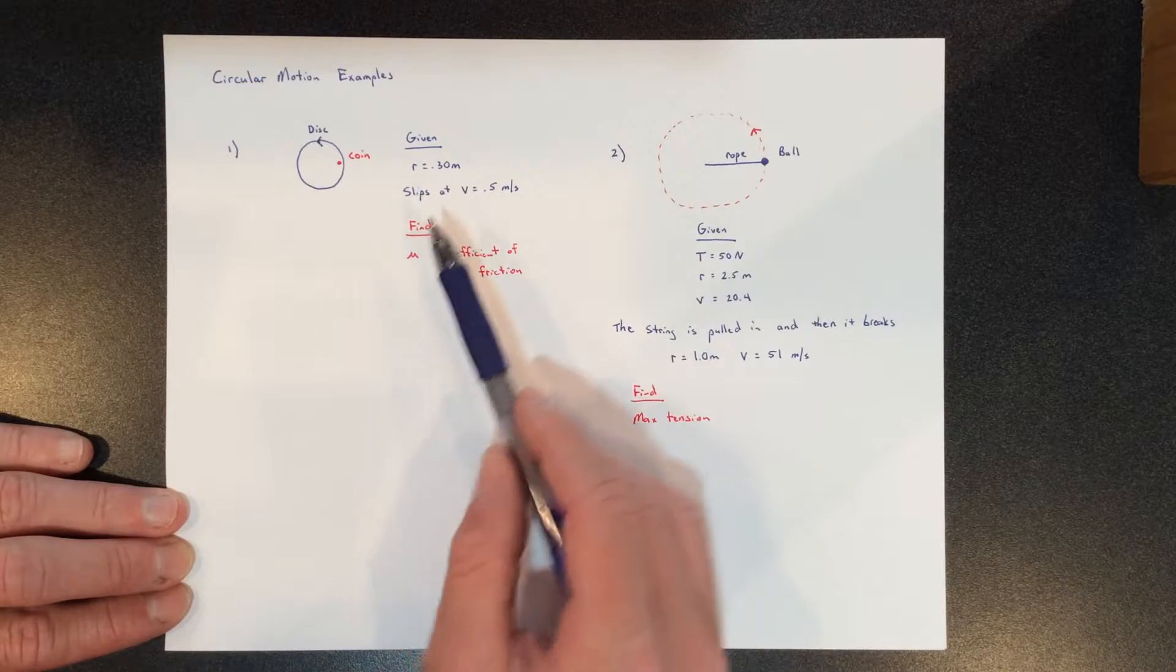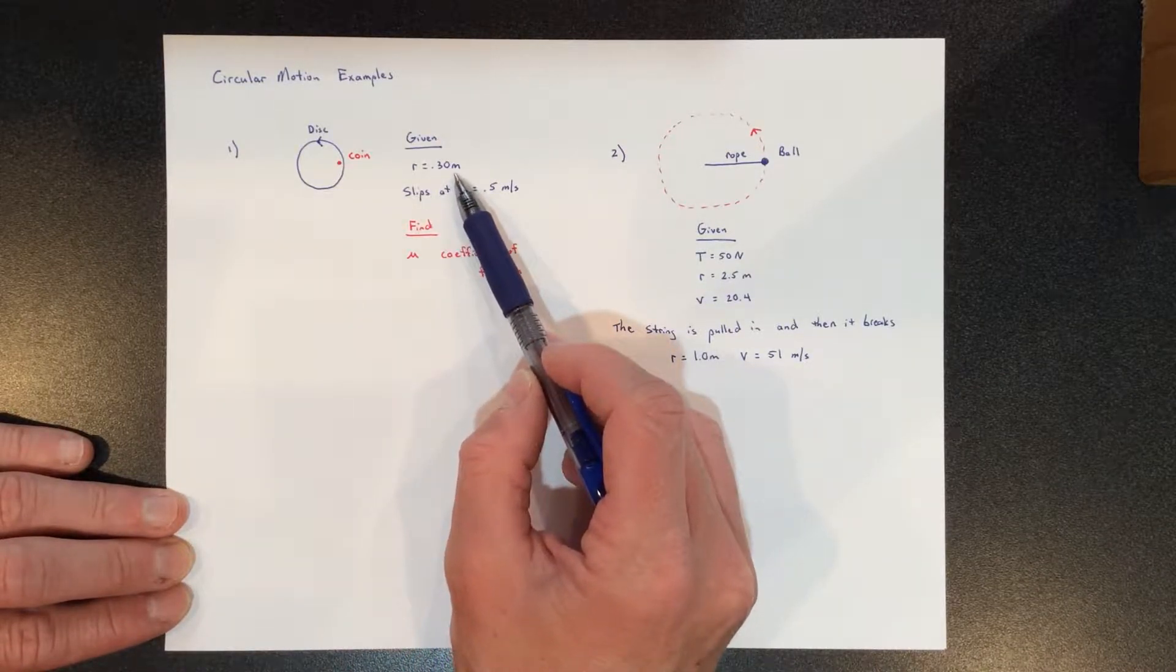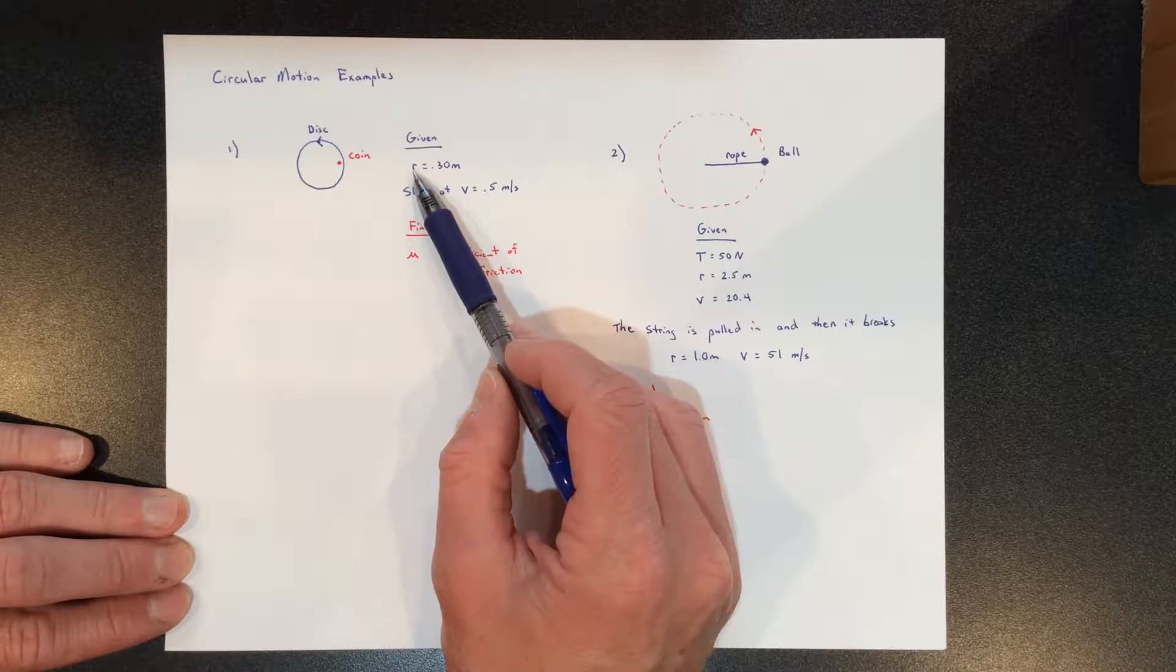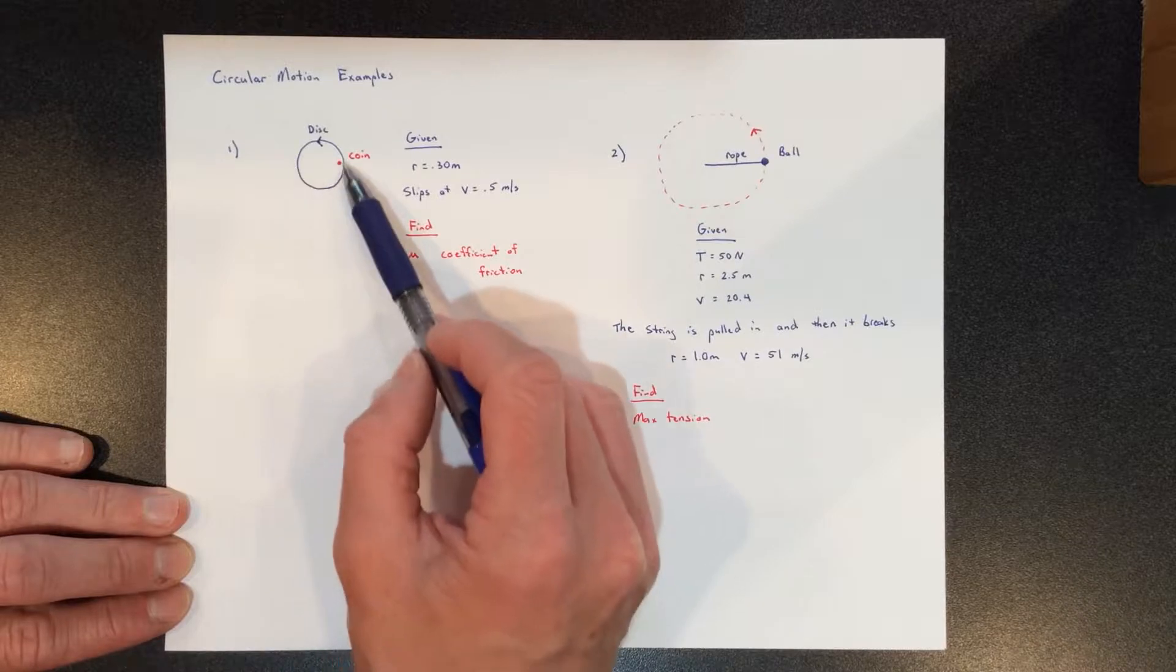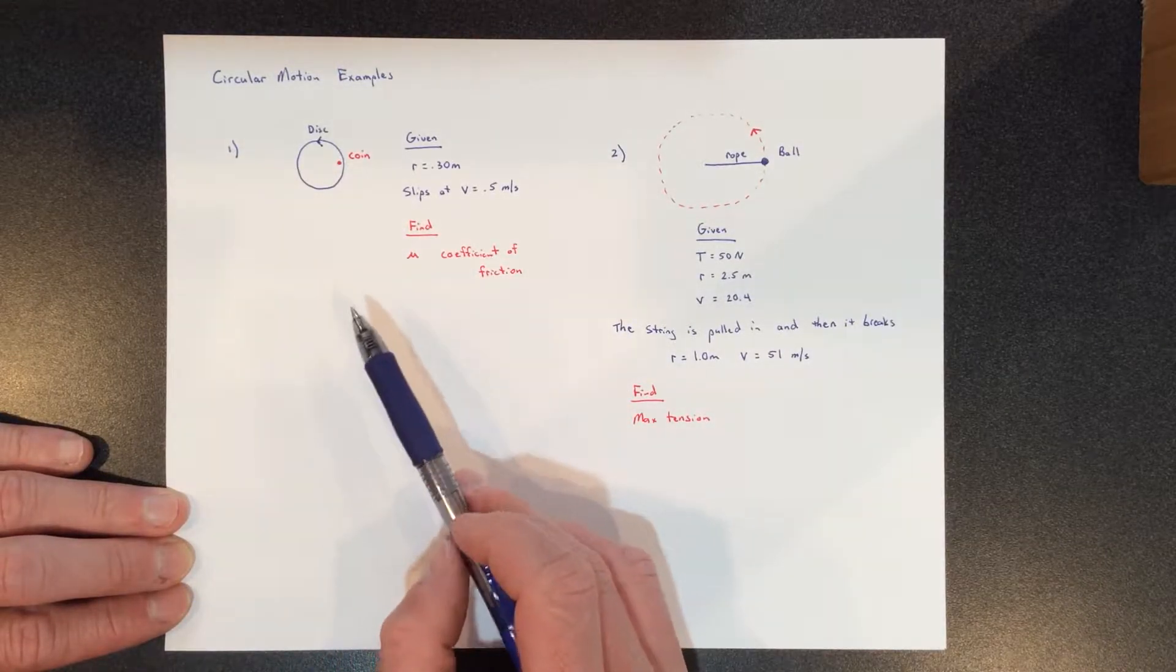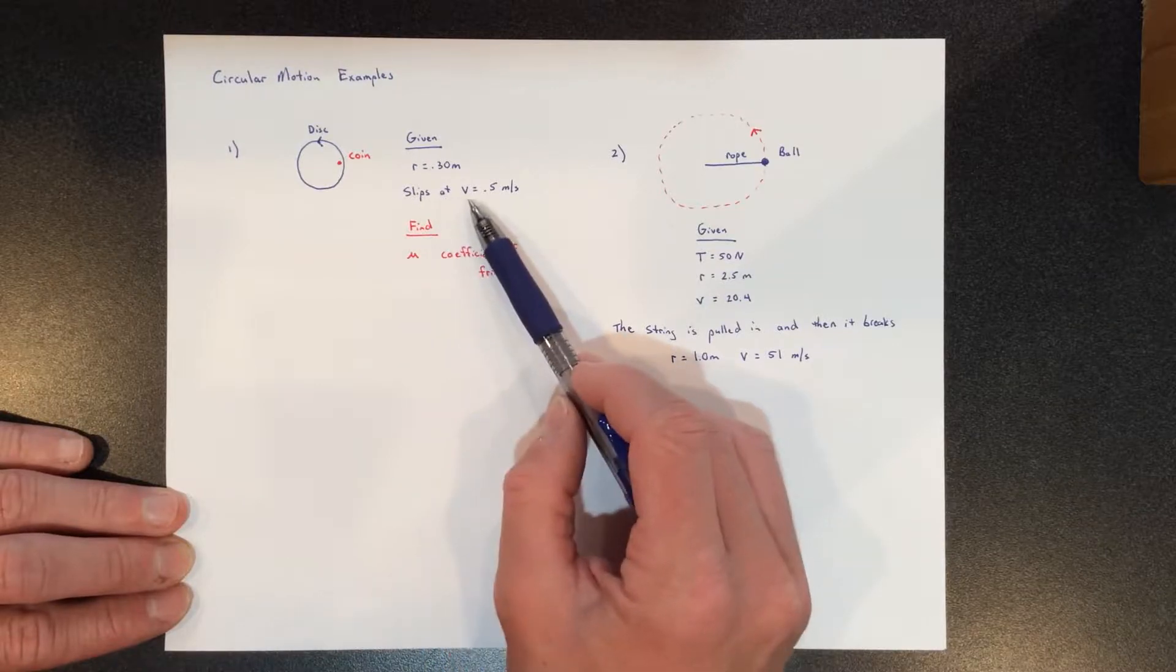What we're given is that the coin has an r value of 0.30 meters, and remember the r value is the distance the coin is from the center of the circle, which basically gives you the radius of the coin's circular motion. We're told that the coin starts to slip at a velocity of 0.5 meters per second.